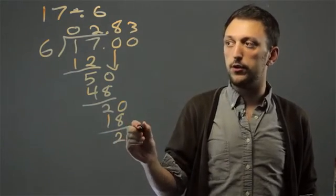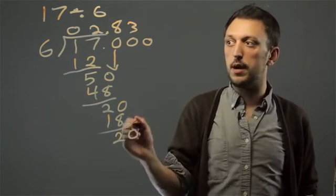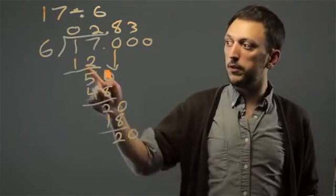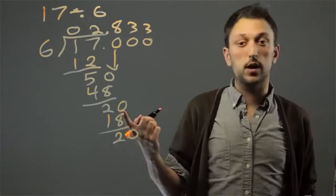6 again doesn't go into 2. We bring down our third 0, and this is the thousandths place. 6 goes into 20 three times, and we're done.